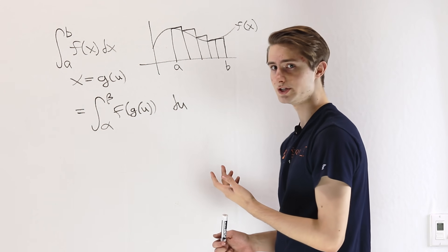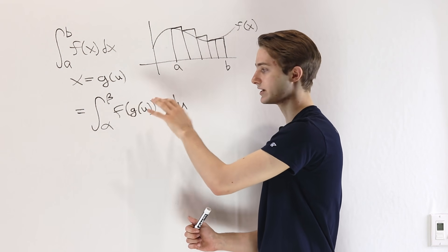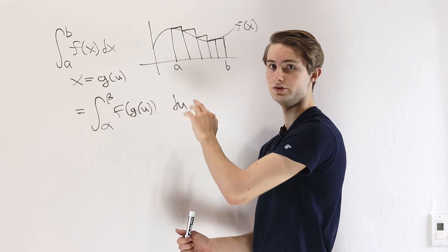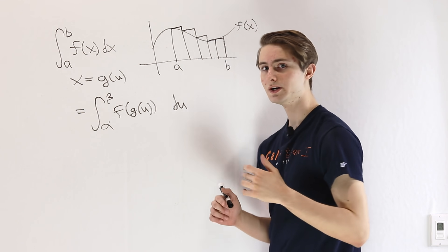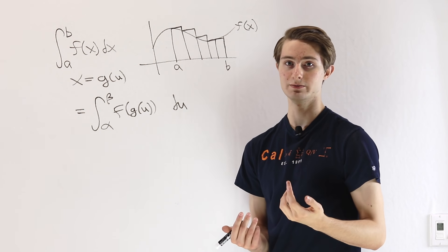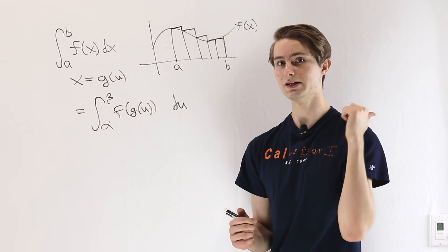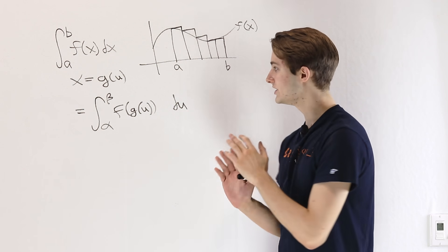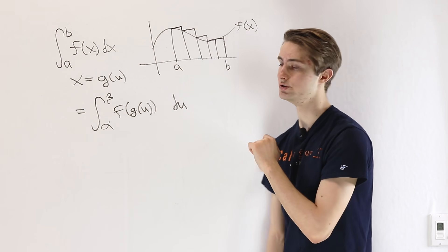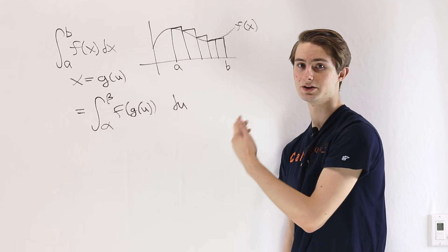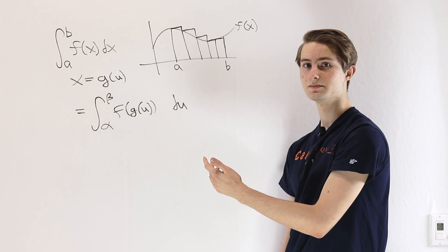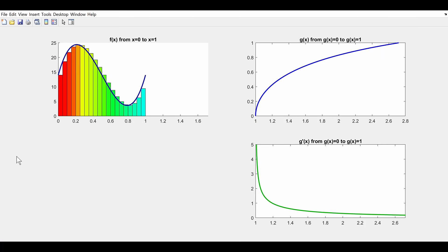The question is: is there anything missing from this new integral? We want to understand that geometrically, so I'm going to hop into MATLAB and take a look at how this substitution has affected the Riemann sum. In the top left of the screen you can see the graph of f of x — that's this blue curve right here.